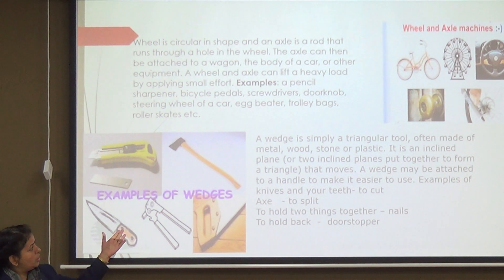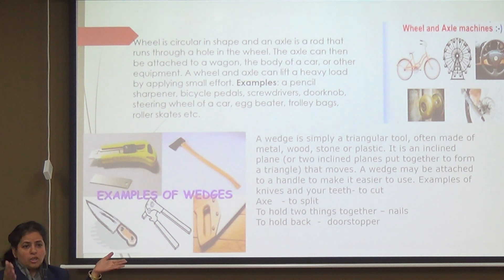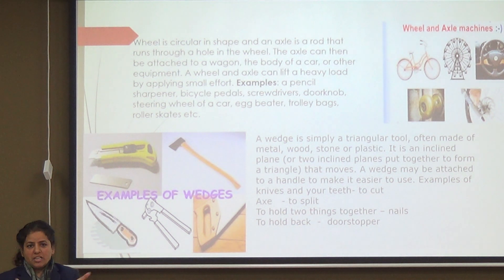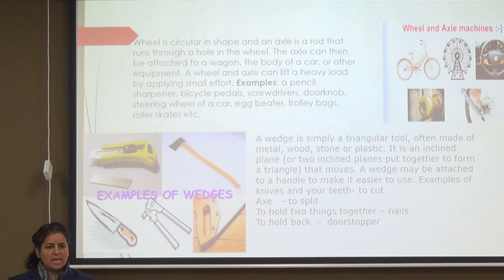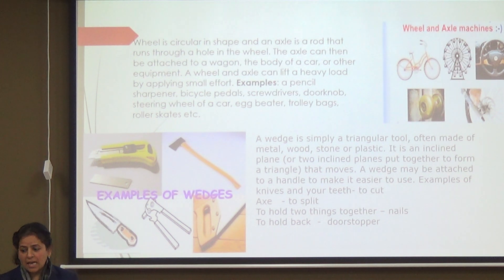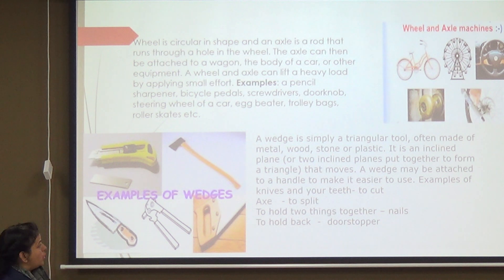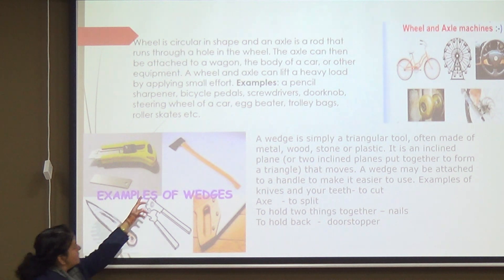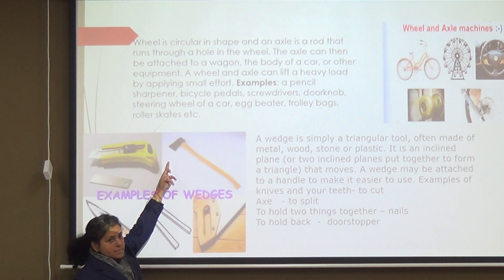The next simple machine is the wedge. A wedge is actually two inclined planes joined together, which gives it a triangular shape. It can be made of metal, wood, or plastic, and a wedge is typically attached to a handle.